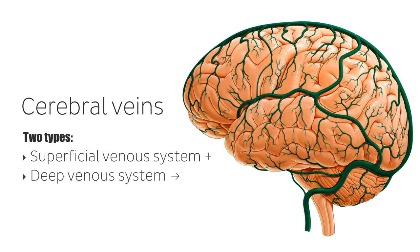Both sets of veins drain into the internal jugular vein. However, since our focus today is on the superficial veins of the brain, we'll leave a deeper discussion of the deep veins for another tutorial.